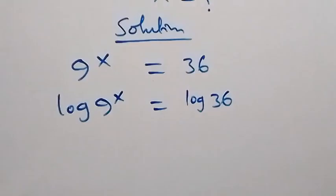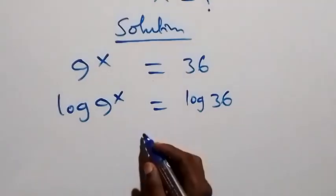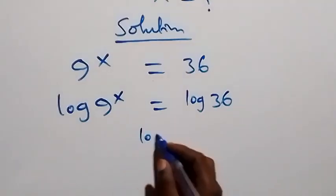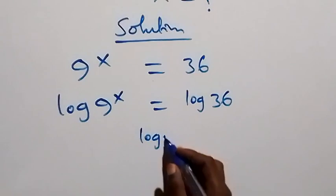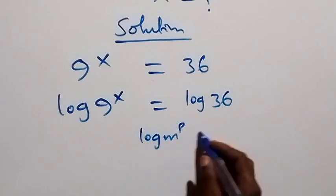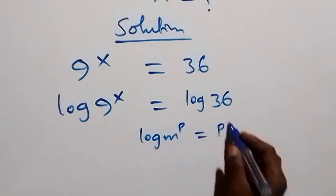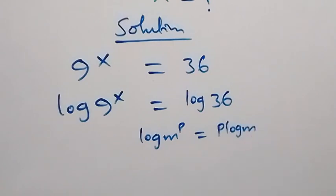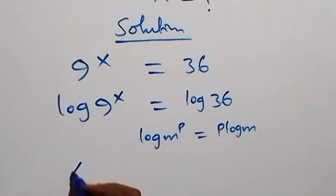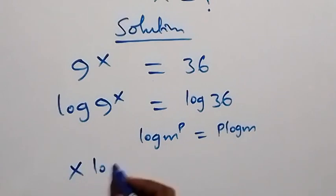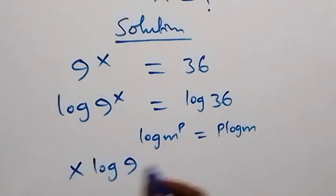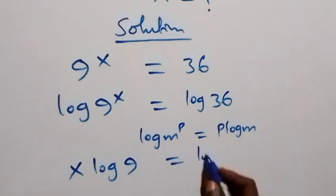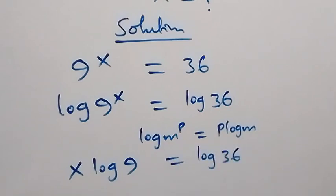Then we apply the power law of logarithm here. We have log m raised to power p equals to p log m. So what we have here becomes x log 9 equals to log 36.